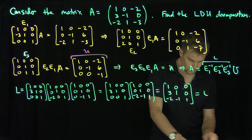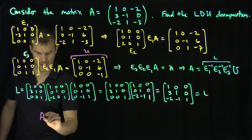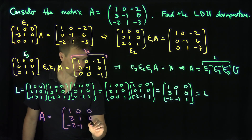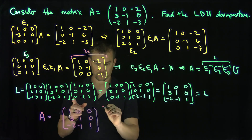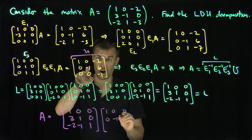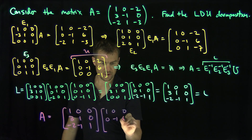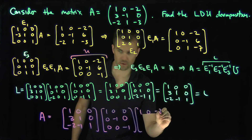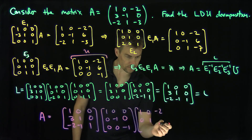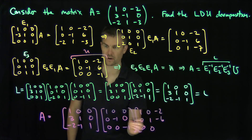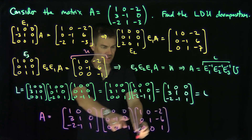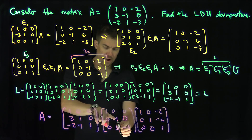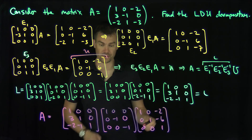Now the final step is to put this all together with a diagonal matrix in the middle. A equals L times D times U, where L is 1, 0, 0, 3, 1, 0, negative 2, negative 1, 1, and D is diagonal with entries 1, negative 1, negative 1. The diagonal entries normalize the rows so that U has 1's on the diagonal. In general, you pull the diagonal pivots out and divide each row accordingly. This is our LDU decomposition.